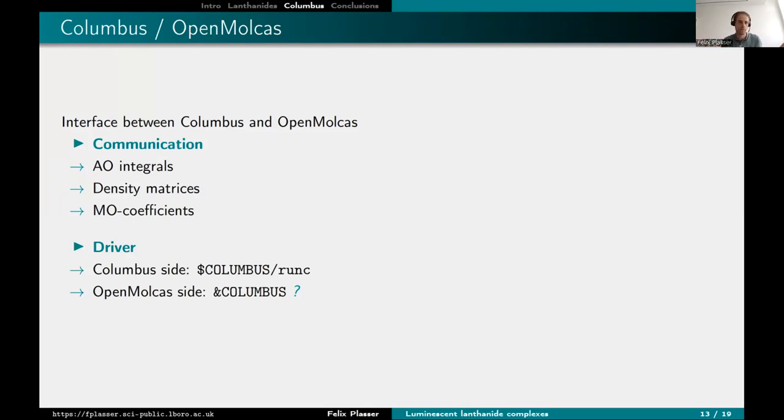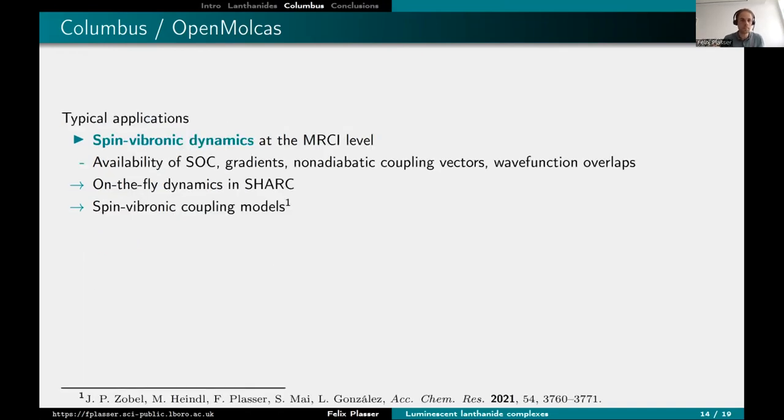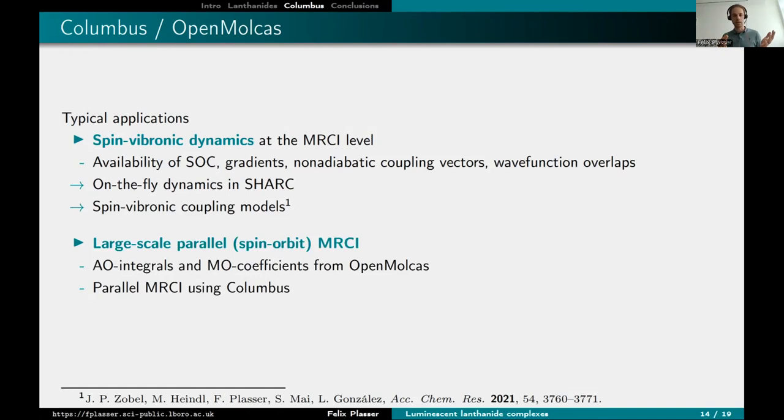So in principle, you can run it from both sides. Typical applications, something where we do spin vibronic dynamics at the MRCI level, because you have spin orbit coupling, gradients, coupling vectors, wave function overlaps, and we have been using that for on the fly dynamics in SHARC. The other thing I always like to advertise is spin vibronic coupling models, because it's almost like you're cheating and you just run computations on one geometry and you get so much information. This is what we saw in the Jakob Staab talk on lanthanide complexes that just by parametrizing this first order spin vibronic coupling model, you get so much information about your system in a very cheap way.